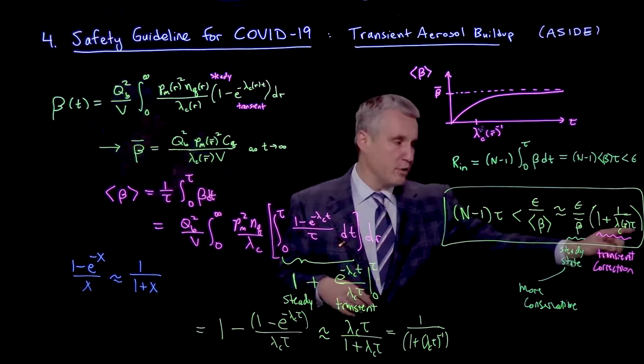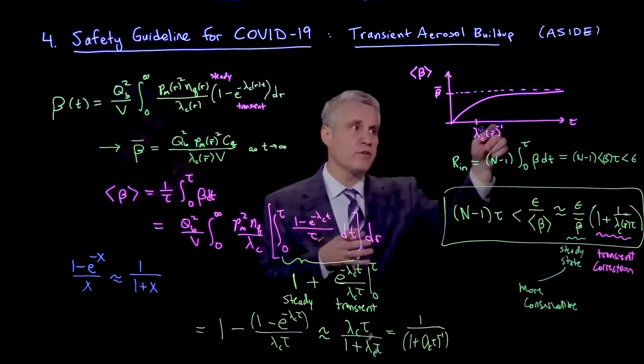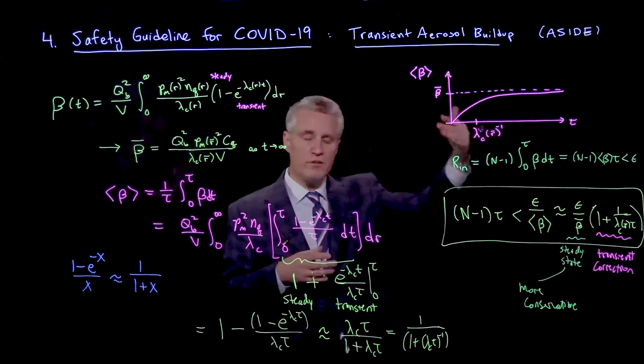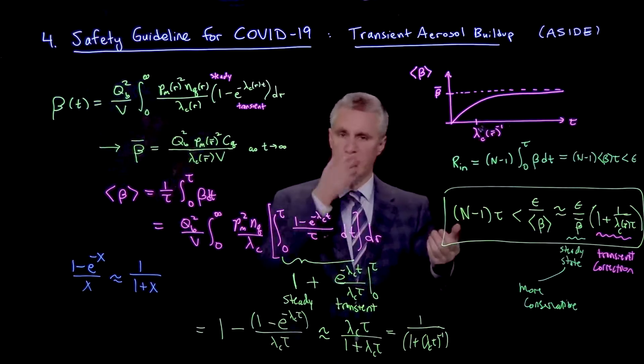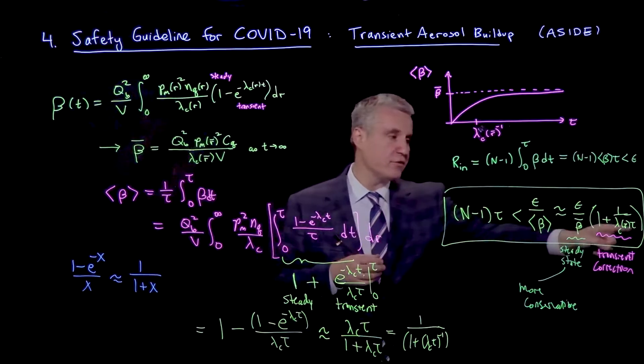So the effect of the transient correction, as you can see here, is when lambda C tau is larger than 1, so that's times that are out here, that term is gone. But when you get to these earlier times, or very short times, where there hasn't been time yet for the buildup of the airborne concentration.